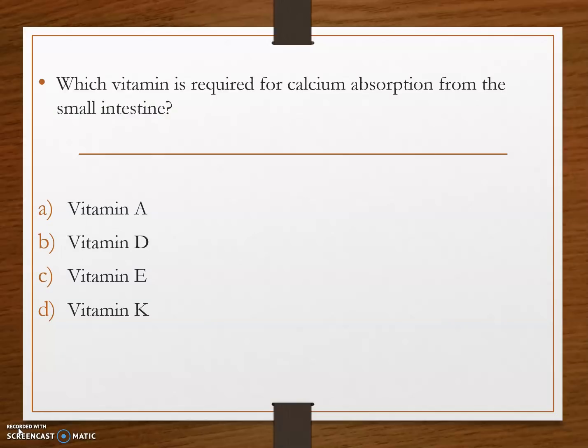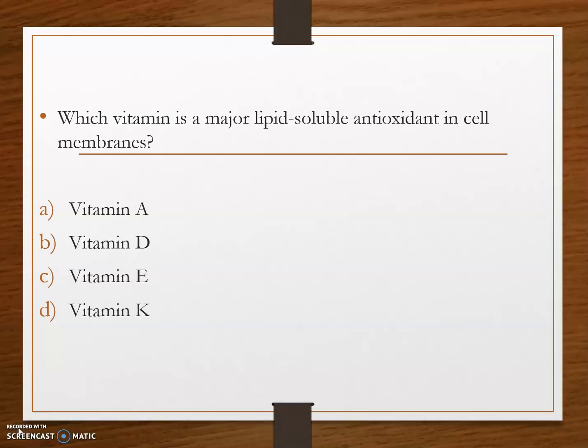Next question: which vitamin is required for calcium absorption from the small intestine? Options are: option A, vitamin A; option B, vitamin D; option C, vitamin E; and option D, vitamin K. The answer is option B, vitamin D. Vitamin D stimulates calcium absorption from the small intestine.